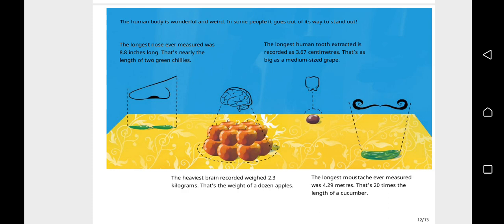The longest human tooth extracted on record is recorded as three point six seven centimeters—that's as big as a medium-sized grape. The longest mustache ever measured was four point two nine meters—that's twenty times the length of a cucumber.